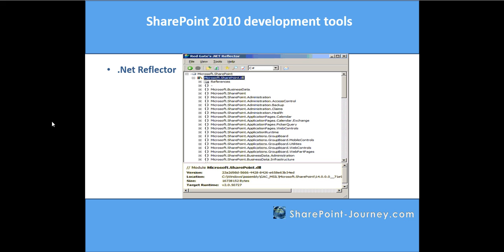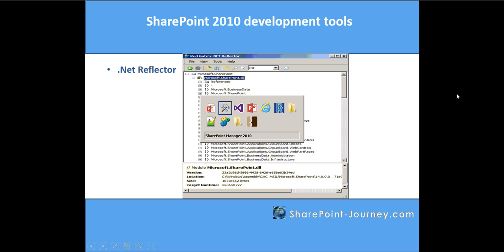Next one is .NET Reflector. As you can see, we have added microsoft.sharepoint.dll and it displayed all the internal details of that particular DLL. In the bottom you can see the version details of that particular DLL, and even what framework it is going to run on. Let's open the .NET Reflector.